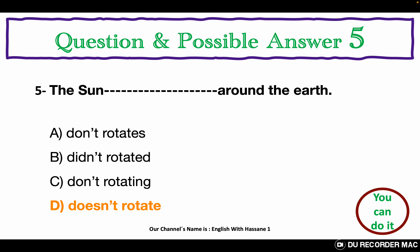Question and possible answer 5. All the questions of this grammar test are in the present simple negative. Choose the best answer A, B, C, or D. The sun ___ around the earth. A. Don't rotates. B. Didn't rotated. C. Don't rotating. D. Doesn't rotate. The correct answer for this question is the letter D. Doesn't rotate.